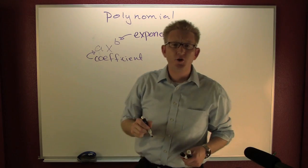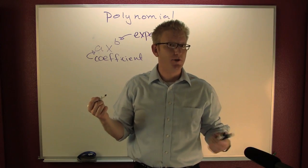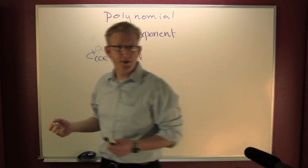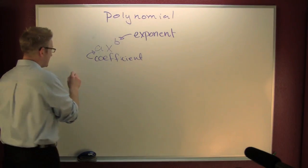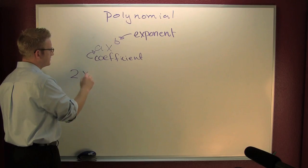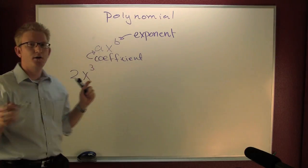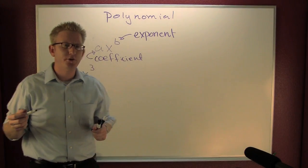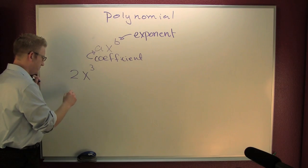A polynomial with one term is called a monomial. Here's an example of one such monomial. What about this one?